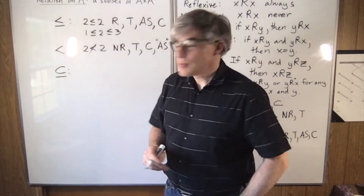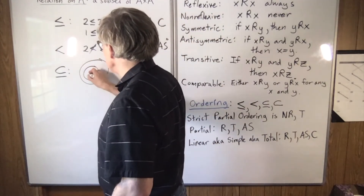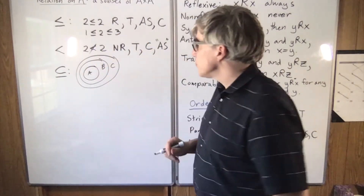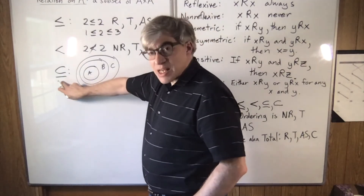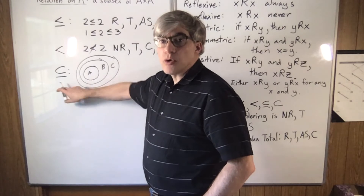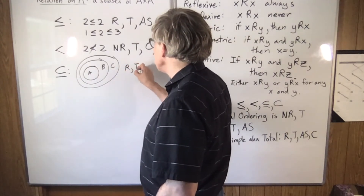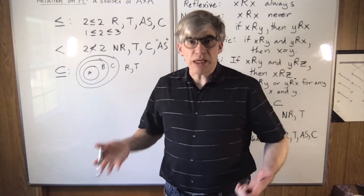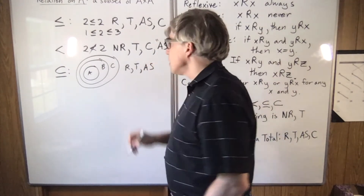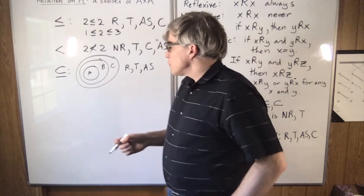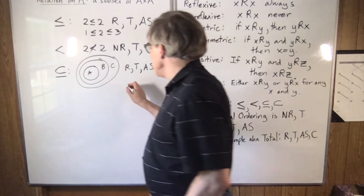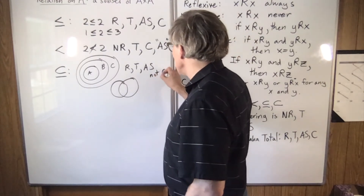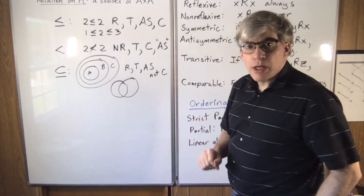Subset or equal: if A ⊆ B and B ⊆ C, then A ⊆ C — transitive. Is something a subset of itself? This is subset or equal, so yes — reflexive. Antisymmetric: if A ⊆ B and B ⊆ A, then A equals B — yes. Comparable: for any two sets, is one of them necessarily a subset of the other? No — so not comparable. Which means subset or equal is a partial ordering but not a total ordering.